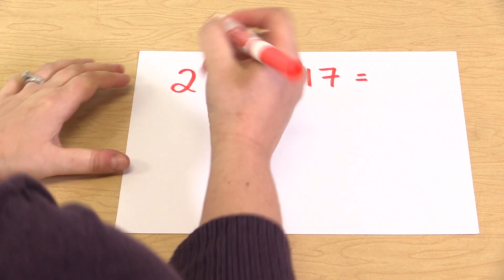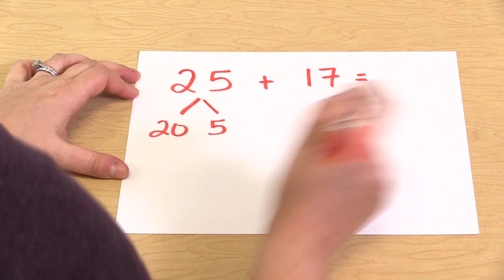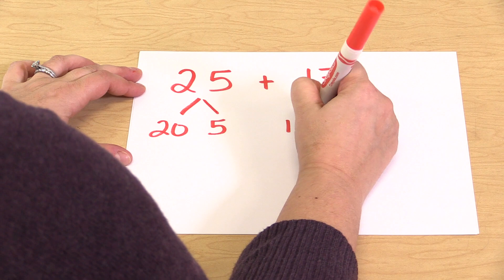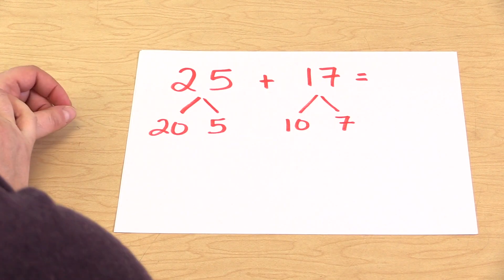So the first step would be to break apart the 25 into 20 and 5, and the 17 into 10 and 7. And we would group together the tens first.